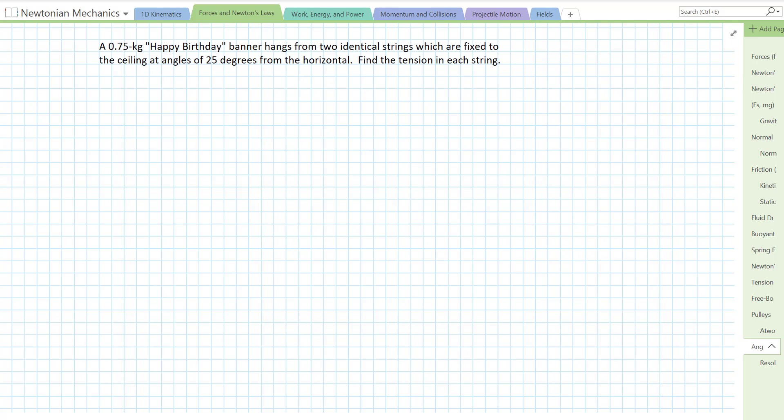A 0.75 kilogram happy birthday banner hangs from two identical strings which are fixed to the ceiling at angles of 25 degrees from the horizontal. Find the tension in each string.